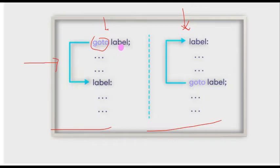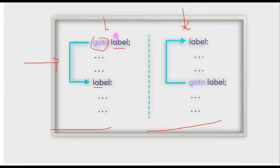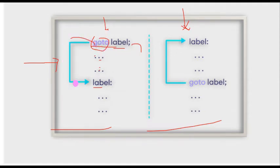In order to make an unconditional jump from here to here, you can write a label with a colon and then a goto statement with a semicolon. The label and goto reference must match, and this goto followed by the label helps to automatically jump. When we call a goto label, it automatically jumps from here to here and this statement in between is ignored.